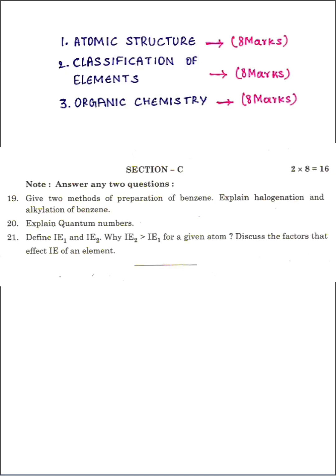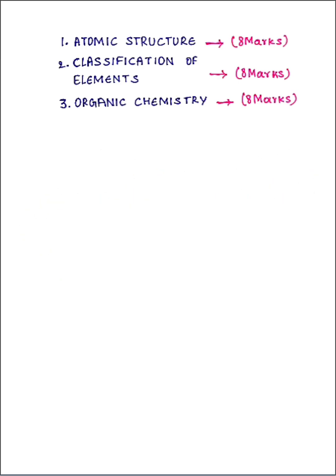Under Section C, question 19 is from organic chemistry, question 20 is from atomic structure, and question 21 is from classification of elements. You have a choice — you need to answer only two out of three questions. Two multiplied by eight equals 16, so if you answer two eight mark questions you will get 16 marks under Section C.